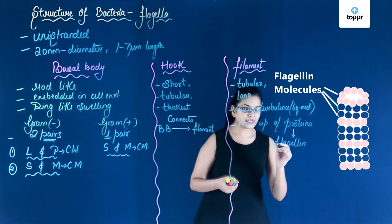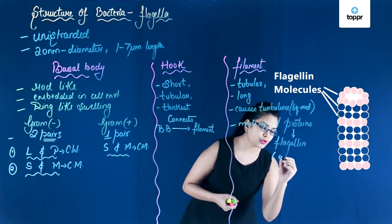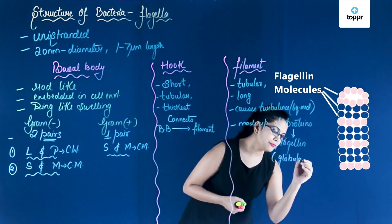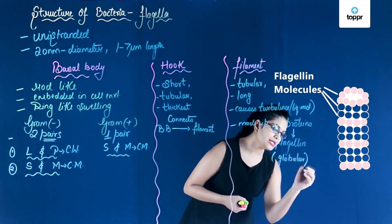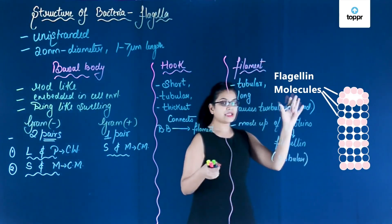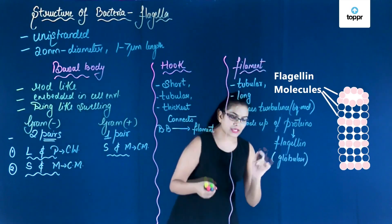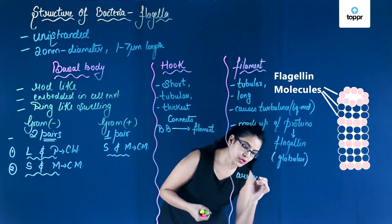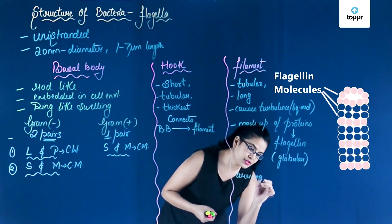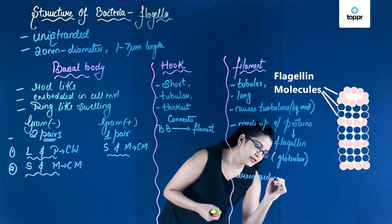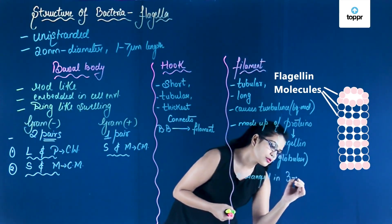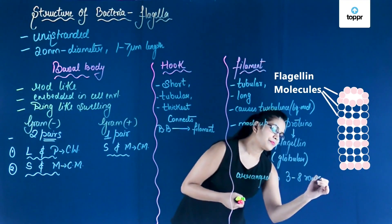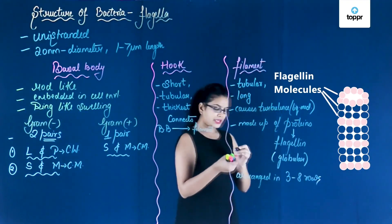Flagellin protein is a globular protein. Looking at the figure, you can see its arrangement — these flagellin proteins are arranged in three to eight rows.